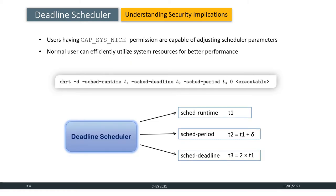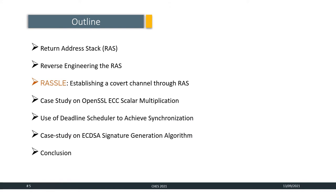To enable the Deadline Scheduler, the user must have CAPSYSNICE permission in order to adjust the scheduling parameters. Normal users can efficiently utilize system resources for better performance using Deadline Scheduler, which is common in case of real-time execution environments. To adjust the scheduling parameters, we can use the CHRT command along with the three parameters sched_runtime, sched_deadline and sched_period and the name of the executable. In this presentation, we will show how utilizing the Deadline Scheduler, an attacker can effectively achieve synchronization with the victim process.